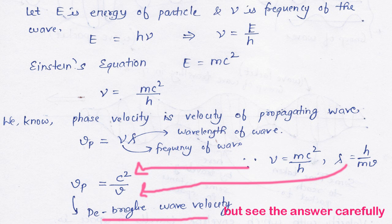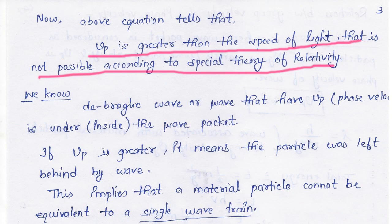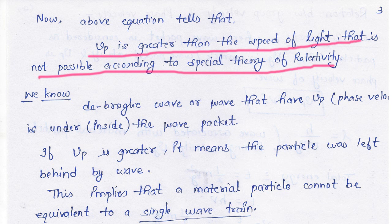But now, the above equation tells us that Vp is greater than the speed of light, which is not possible according to the special theory of relativity.